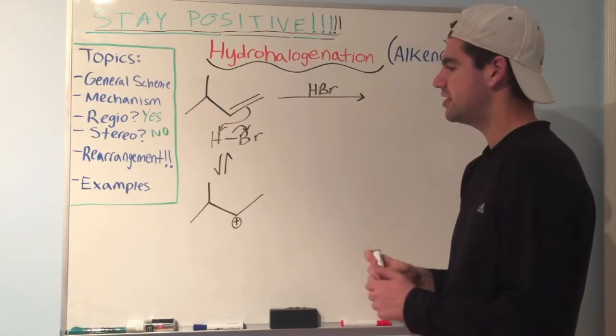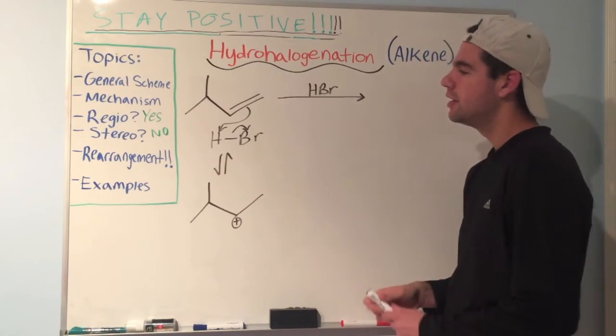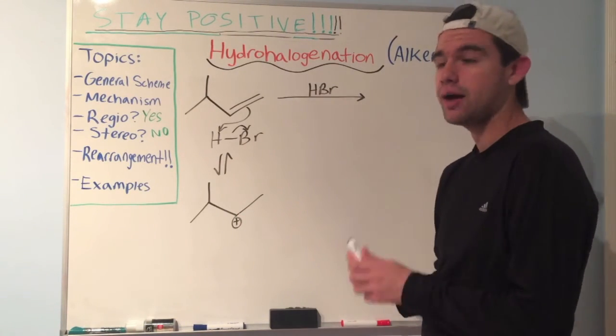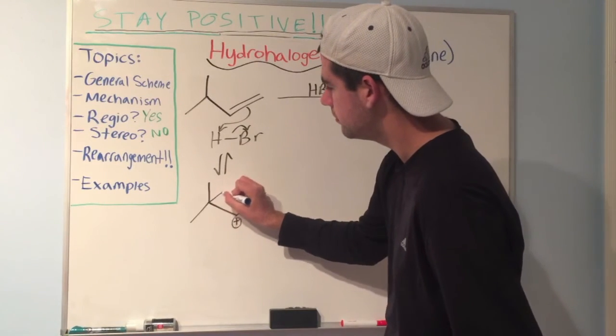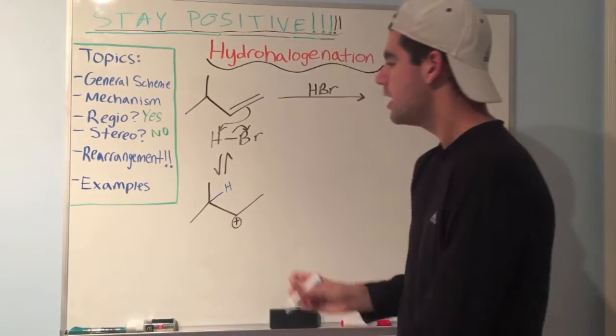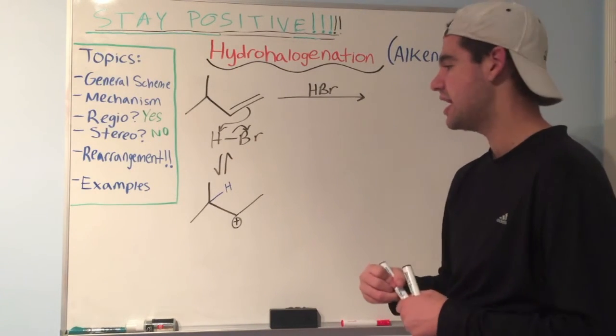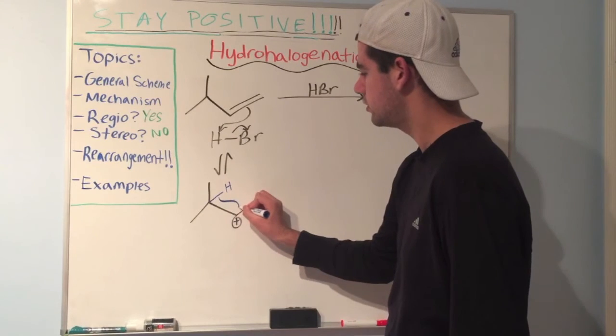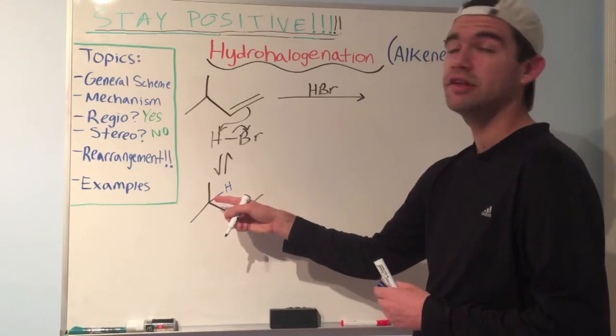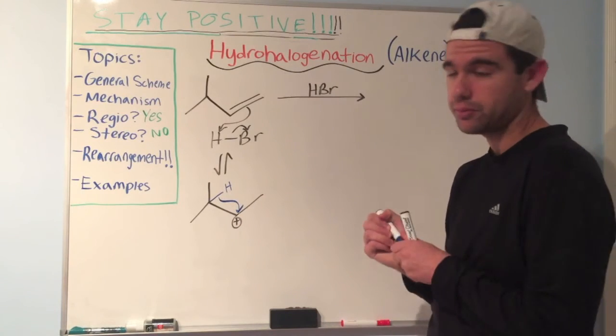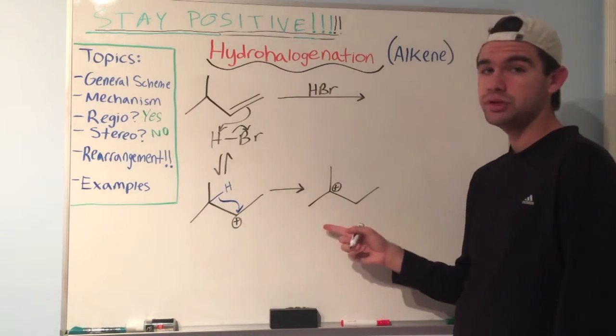So now we might be tempted to say, okay, we have Br- in solution. Let's just attack this, and then we're done. The problem is, though, we have another option. There's a hidden hydrogen right here. So we have to think to ourselves, can we make a more stable carbocation? The answer is yes. If we move this hydrogen over here to the carbocation position, we would be creating a new carbocation, this time tertiary, which is, remember, more stable than secondary.